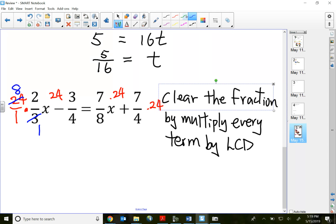So now 8 times 2x will be 16x. So what happened to my denominators? Well, they all become 1.